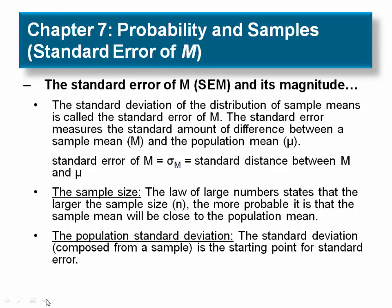The sigma indicates that we are measuring a standard deviation or a standard distance from the mean. The subscript M indicates that we are measuring the standard deviation for a distribution of sample means.